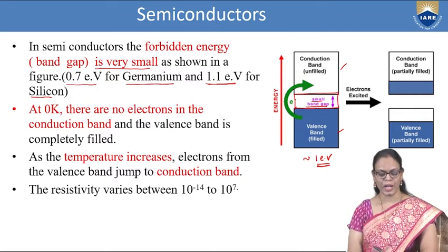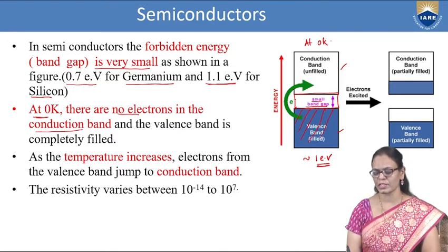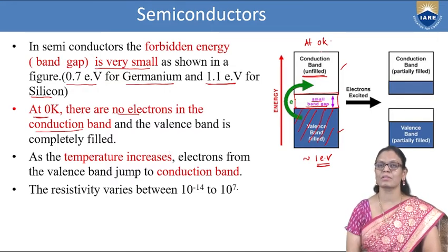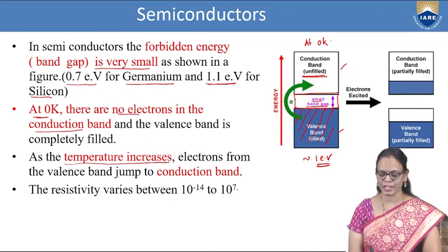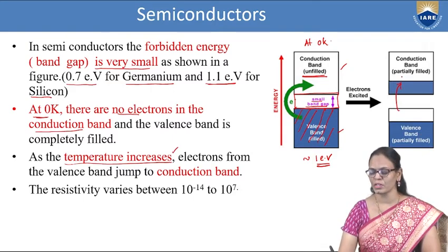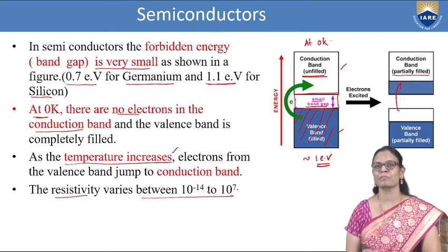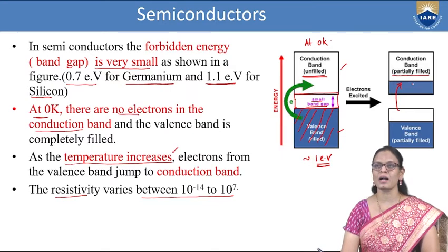At 0 Kelvin, there are no electrons in the conduction band — the valence band is full but the conduction band is empty, so the semiconductor does not conduct and behaves like an insulator. But as the temperature increases, electrons from the valence band jump to the conduction band, so the conduction band becomes partially filled. Therefore with increasing temperature, semiconductors start conducting. The resistivity varies between 10^(-14) to 10^7.